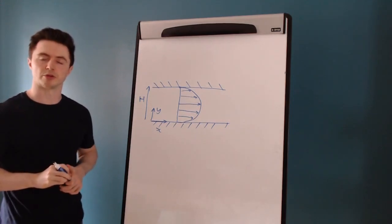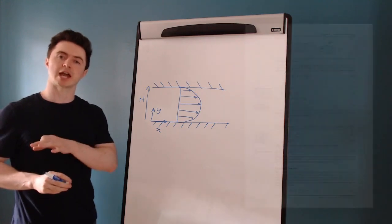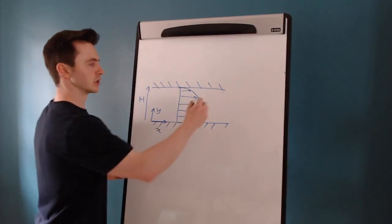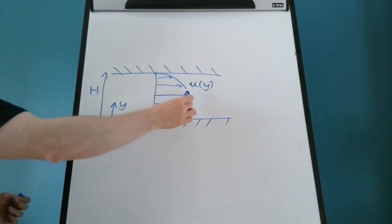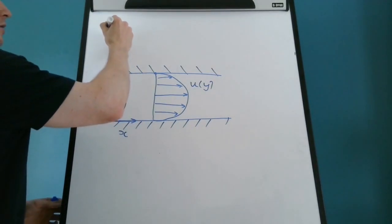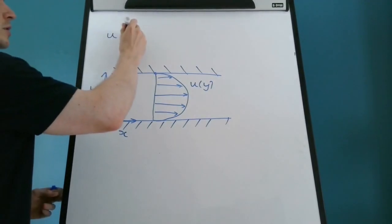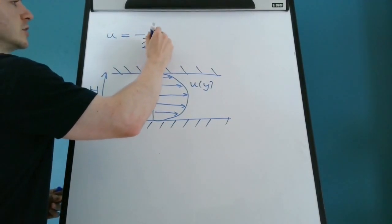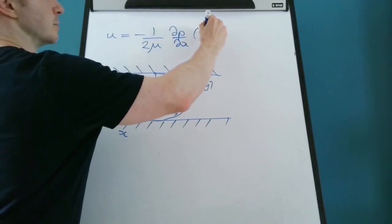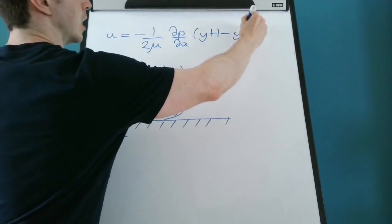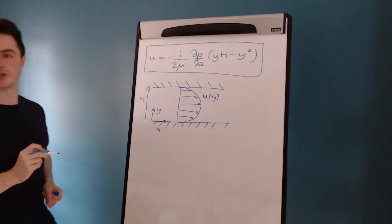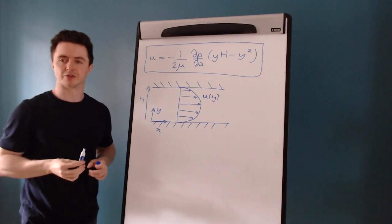You can solve this problem by hand — I've got the full worked solution in the course textbook. The solution tells us the shape of the velocity profile: the axial velocity component U as a function of vertical height Y. The axial velocity component U is equal to minus 1 over 2 times the dynamic viscosity mu, times the pressure gradient in the X direction, multiplied by YH minus Y squared. If we solve the continuity and Navier-Stokes equations by hand, that's the formula we get for the velocity profile.